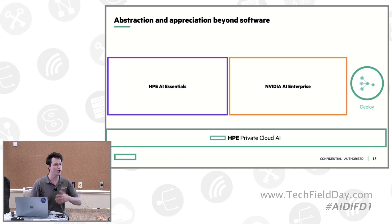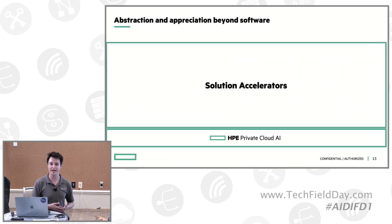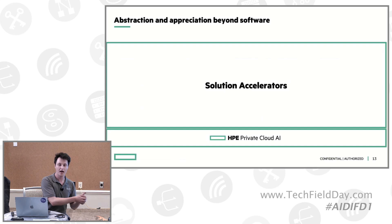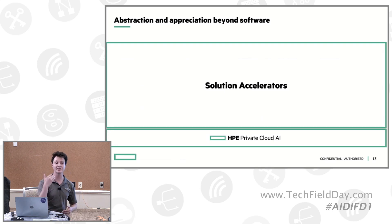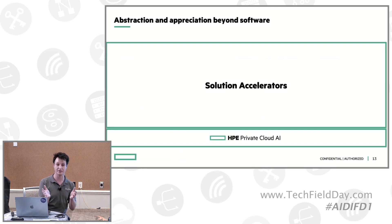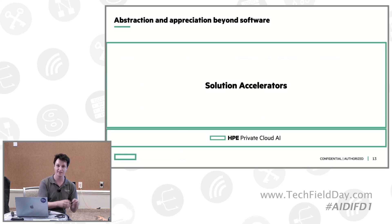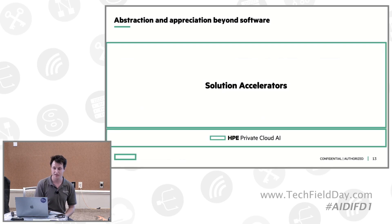With that, we can wrap all of that automation up through an offering coming with Private Cloud AI that we are calling Solution Accelerators. I'm able to leverage a connected data source, select certain files or tables, select a large language model or other generative models, and have them pre-deployed and pre-connected to an end-user application. Data, models, application — all deployed with a single click. That is what is coming with Solution Accelerators on Private Cloud AI.